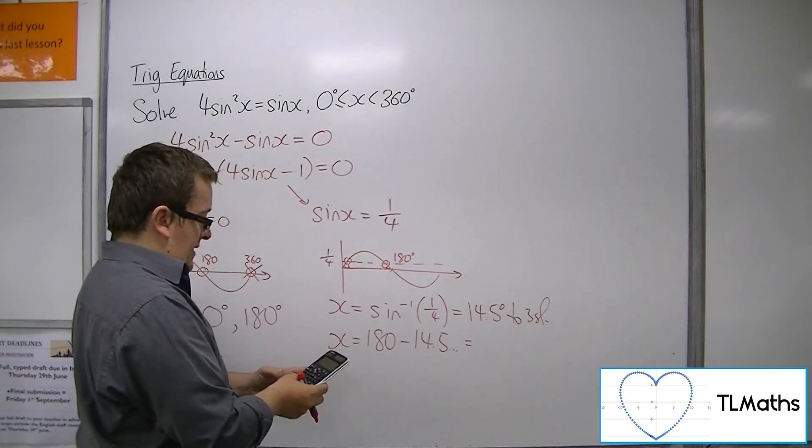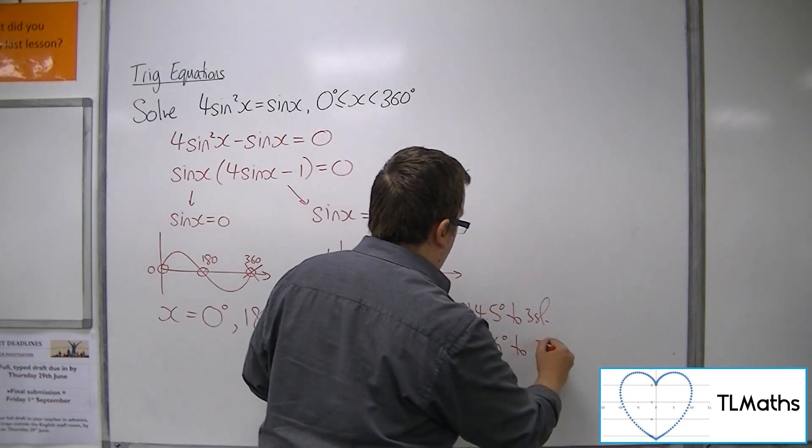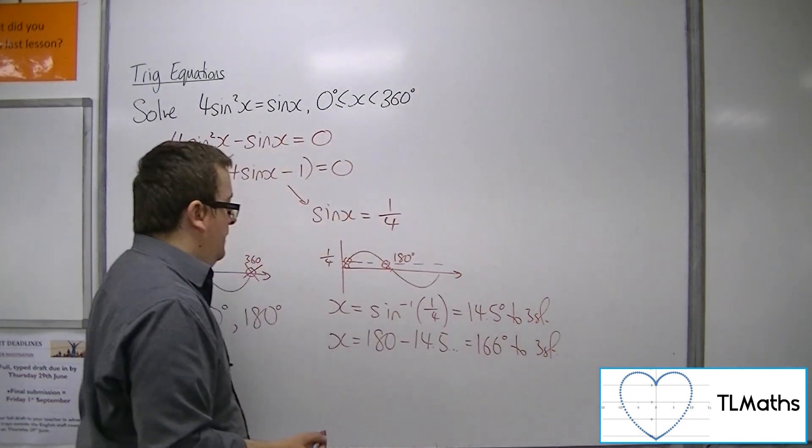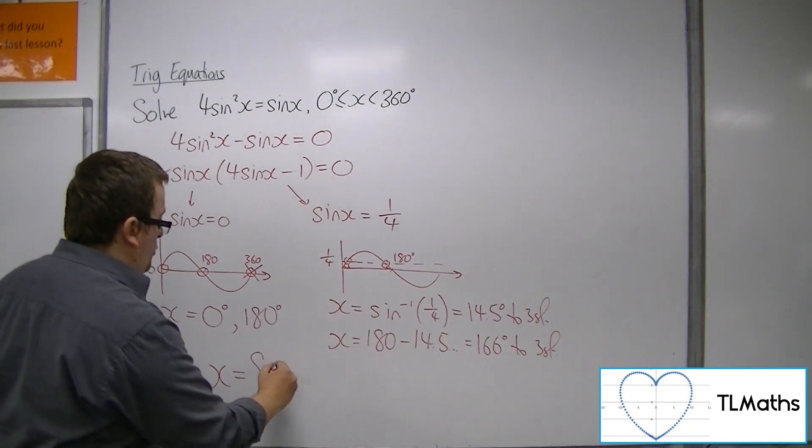So 180 take away the answer key is 166 to 3 significant figures. So we have four solutions.